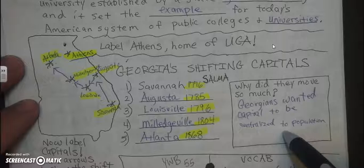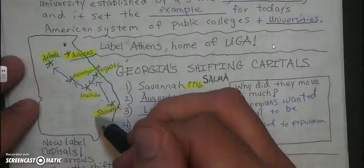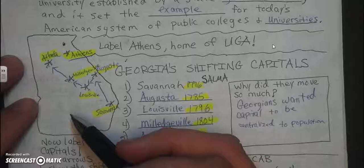The big question is: why did they move so much? Georgians wanted the capital to be centralized to the population, so as the population of Georgia moved north and west, this is why the capital would move as well.